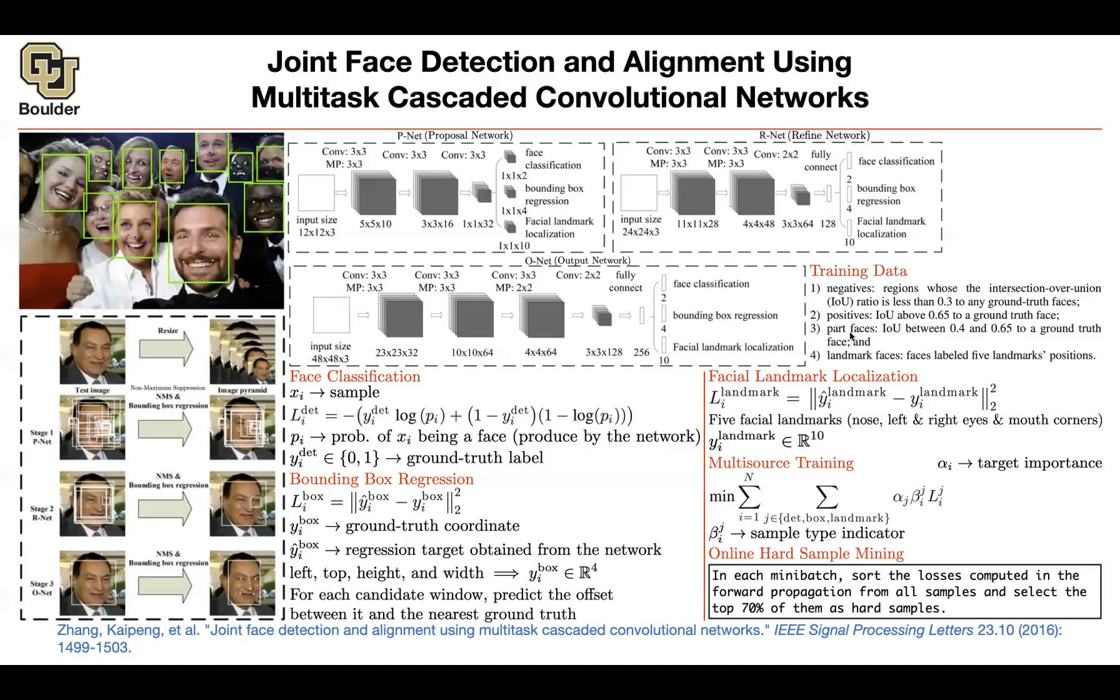What are the part faces? Any box with IoU between these two numbers. Anything else you're discarding. These are part faces, and your landmark faces are where you actually have data—your ground truths. For face classification, you need negative and positive cases to train. For bounding box regression, you look at positive and part faces. You don't need negative cases when doing regression. For your landmark, you look at your landmark faces portion.